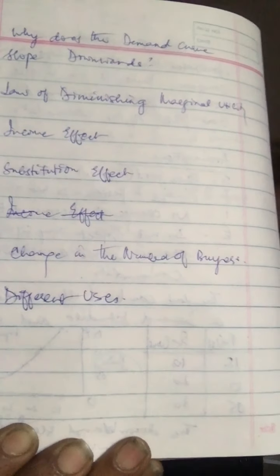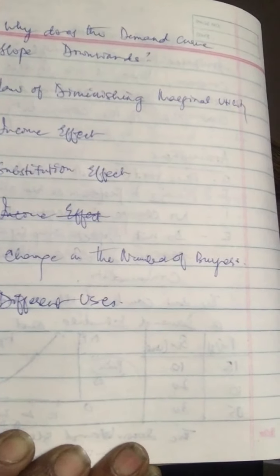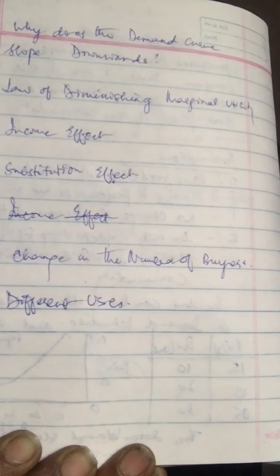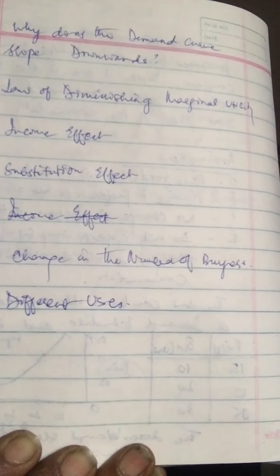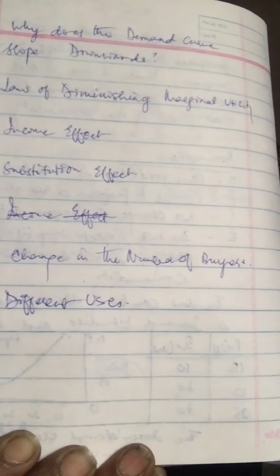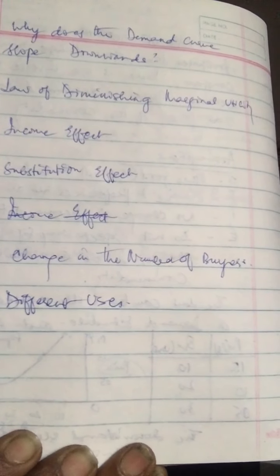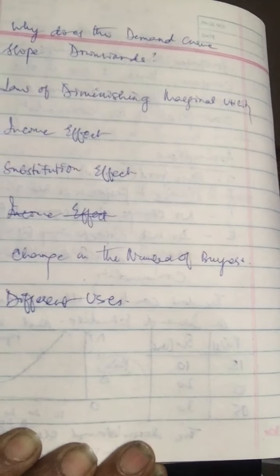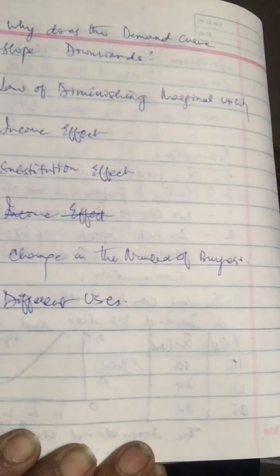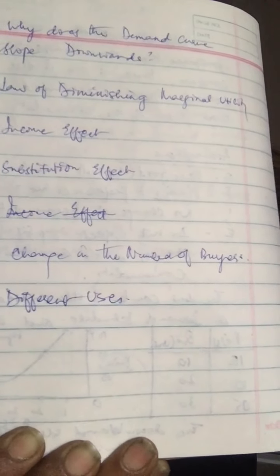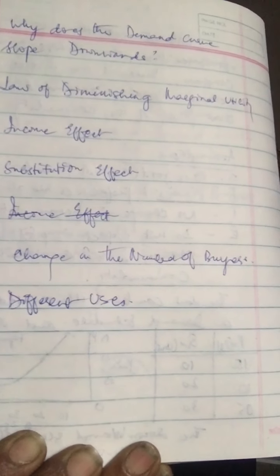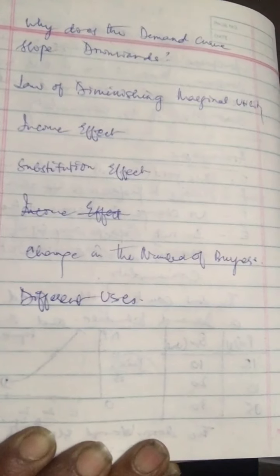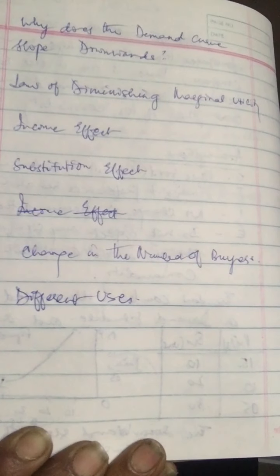There is also the substitution effect. The substitution effect refers to the substitution of one commodity for another when it becomes relatively cheaper. When the own price of commodity X falls, it becomes cheaper in relation to commodity Y, so commodity X is substituted for Y — this is again an expansion of demand for commodity X due to the substitution effect.